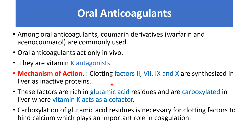The mechanism of action of oral anticoagulants: they act on factor 2, factor 7, factor 9, and factor 10. These are synthesized in the liver as inactive proteins. These factors are rich in glutamic acid residues and are carboxylated in the liver in the presence of vitamin K. So vitamin K is the co-factor for the formation of factors 2, 7, 9, and 10.